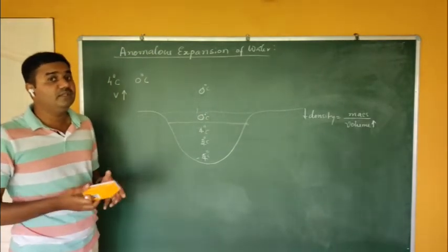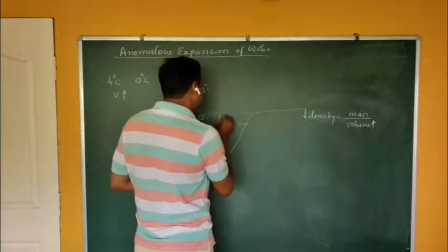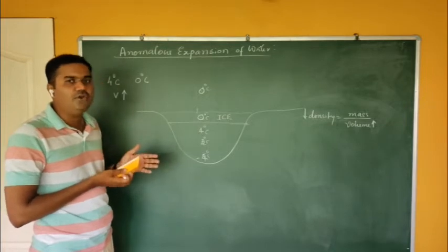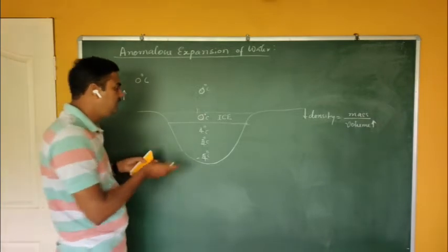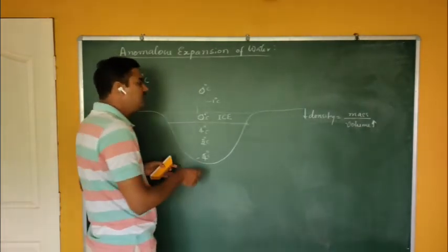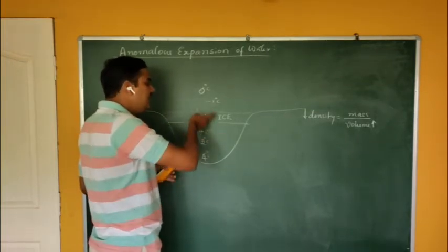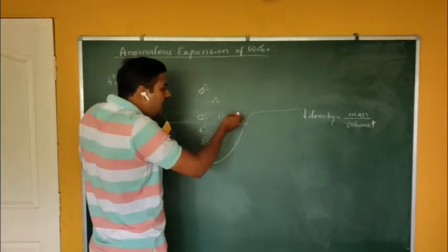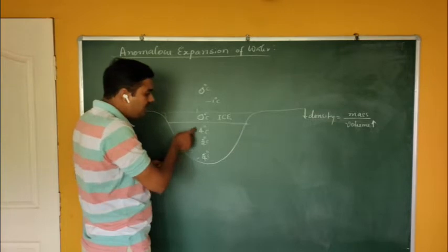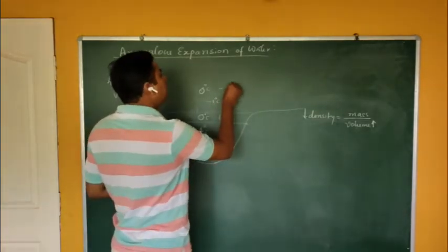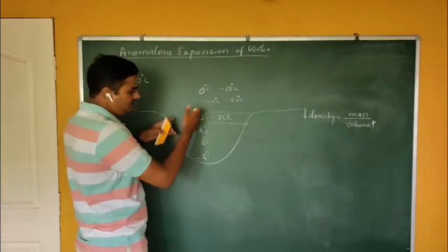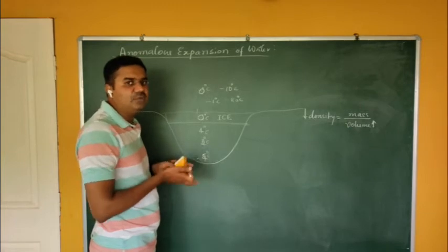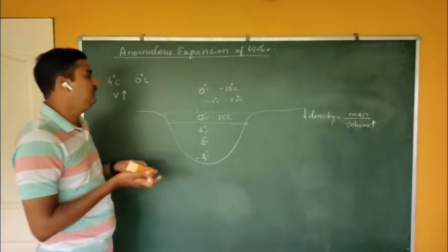When temperature becomes 0°C, water becomes ice. Ice is a bad conductor of heat, so it does not allow heat to move between the lake and the surroundings. Even if the surrounding temperature drops to minus 10 or minus 20°C, the ice layer on top insulates the lower water, which remains at around 4°C.